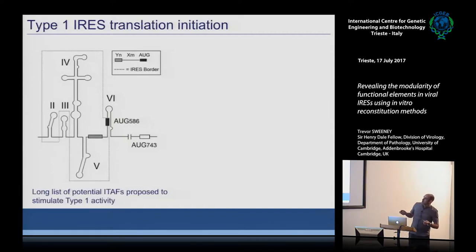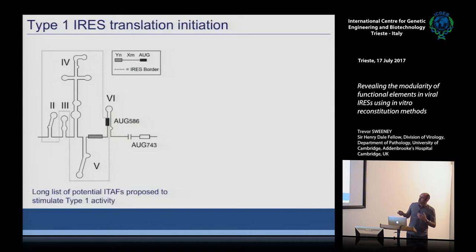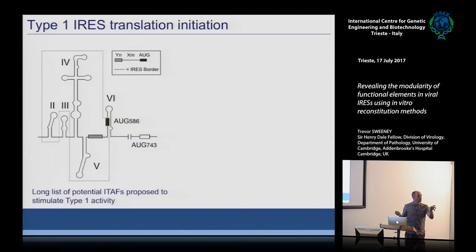I thought: what if we try to reconstitute translation first on this upstream ATG? This ATG is very conserved but in poor context, so normally the ribosome would bypass it and start on the downstream one. The first thing we did was optimize this sequence to put it in a strong translation context.